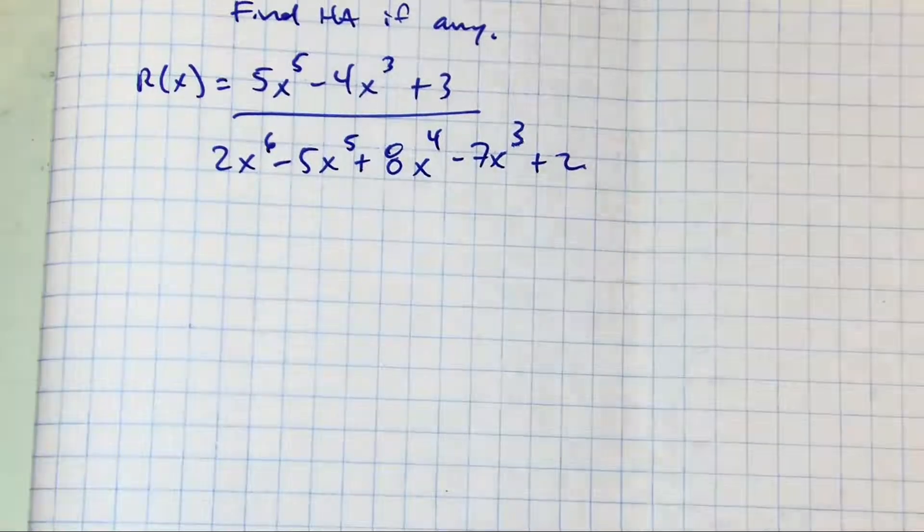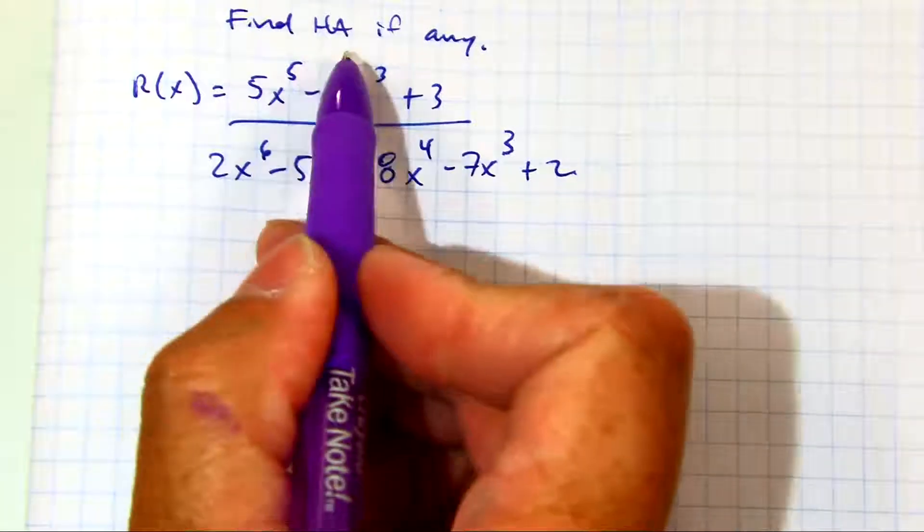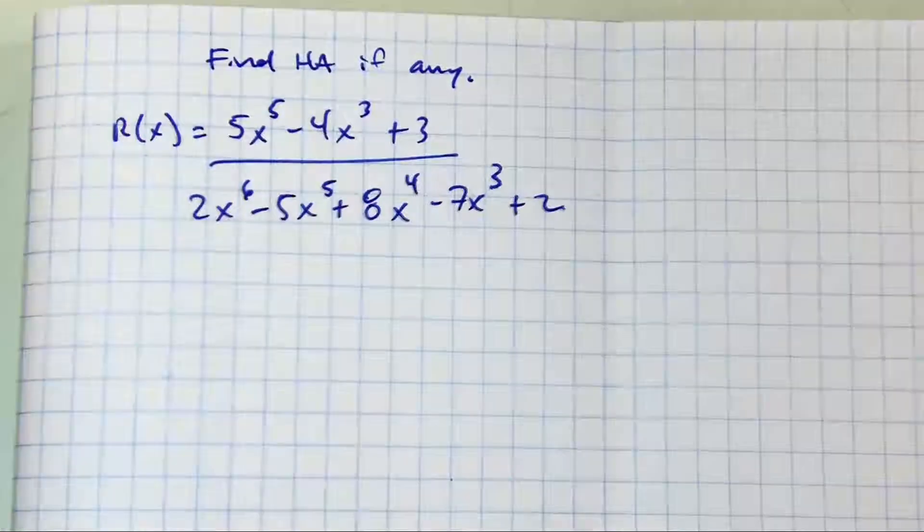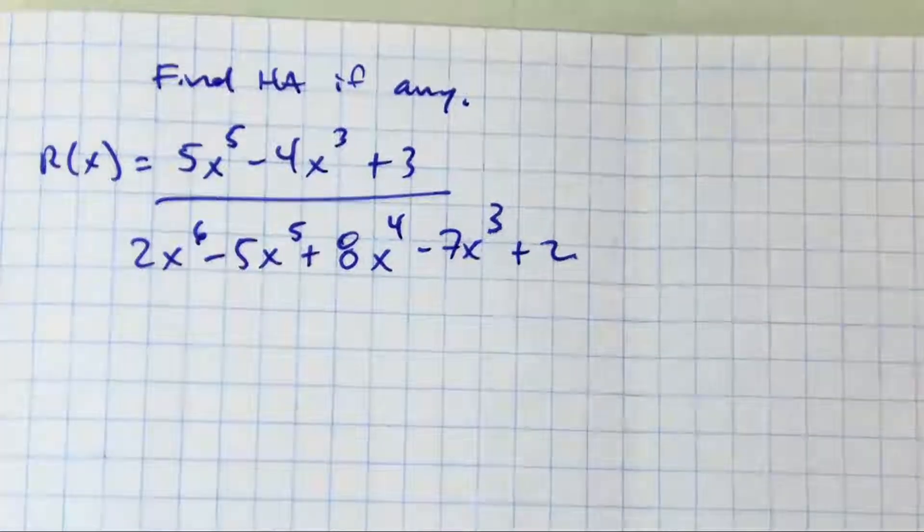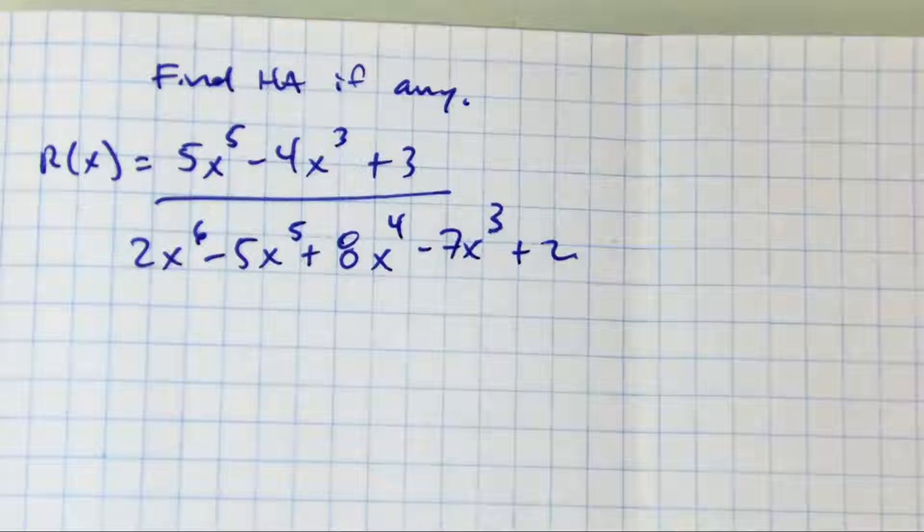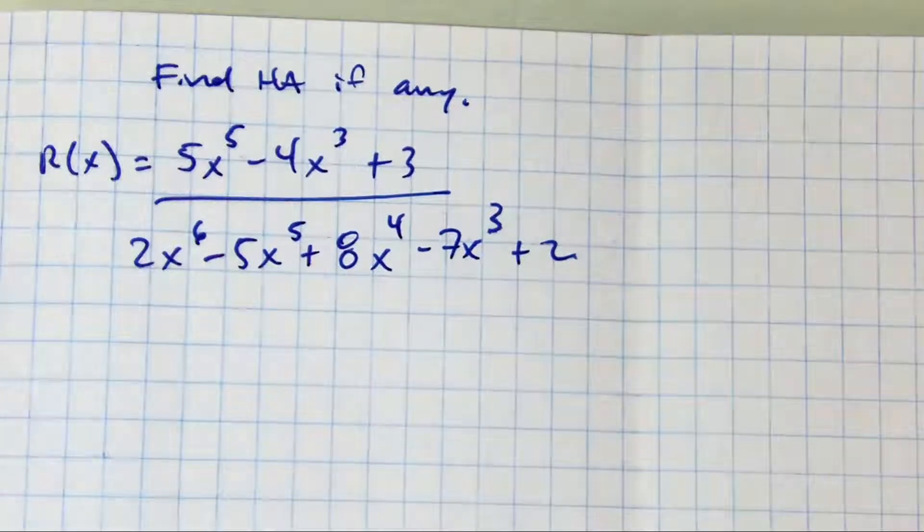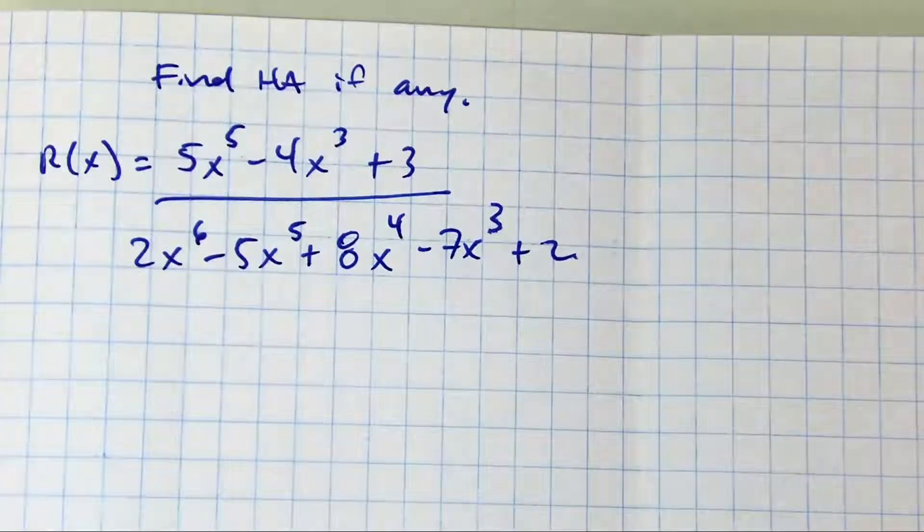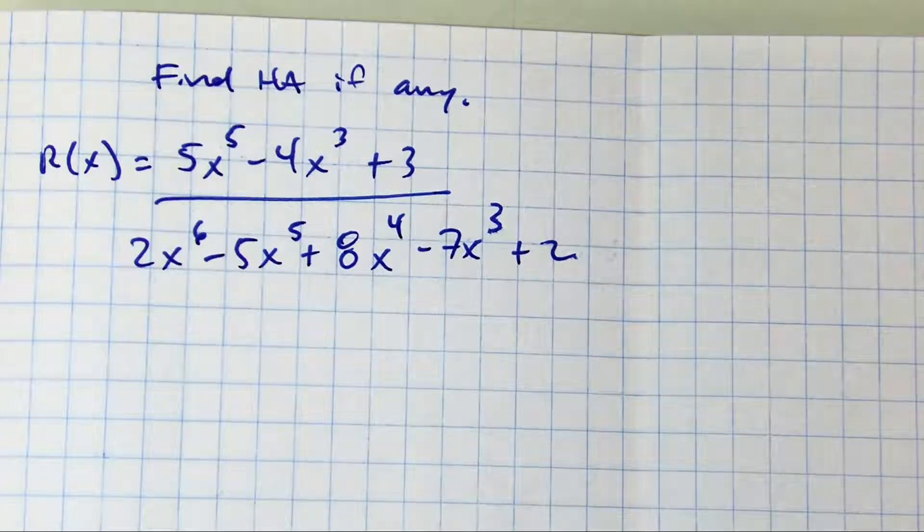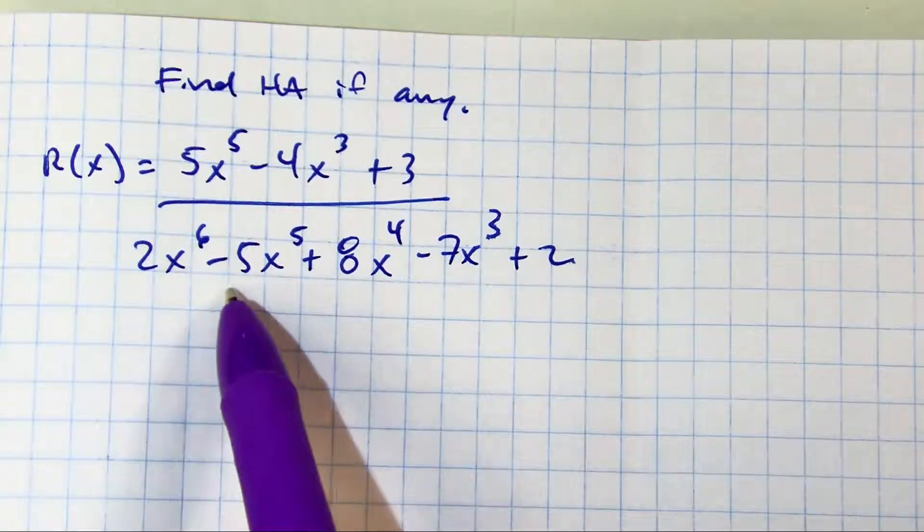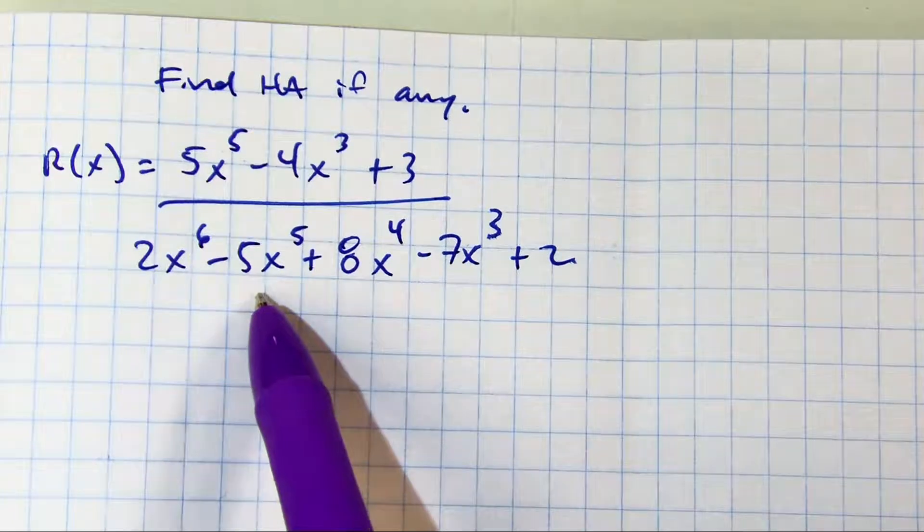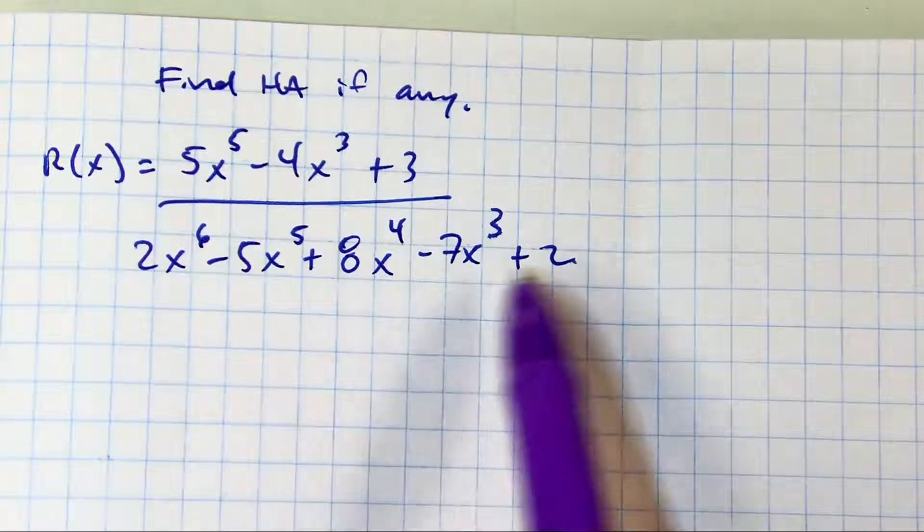It tells us to find the horizontal asymptote of r(x) = 5x^5 - 4x^3 + 3, all over 2x^6 - 5x^5 + 8x^4 - 7x^3 + 2.